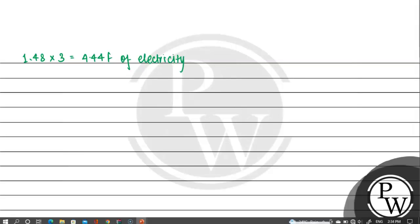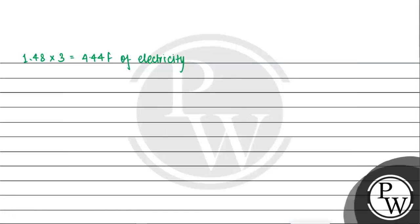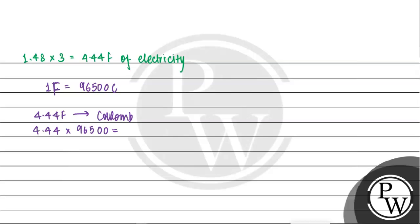Now, the question has asked the value in Coulombs, so we will convert. One Faraday is equal to 96,500 Coulombs. So if we convert, 4.44 into 96,500, which will be equal to 428,460 Coulombs.